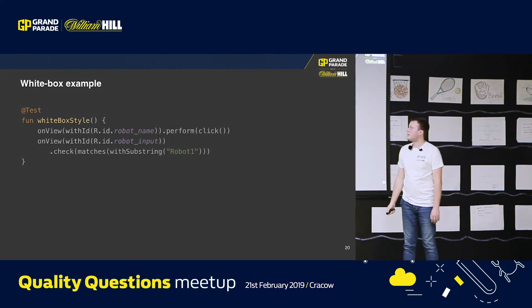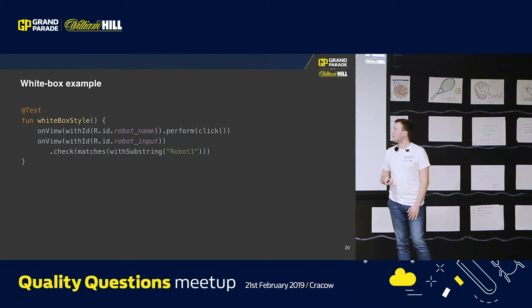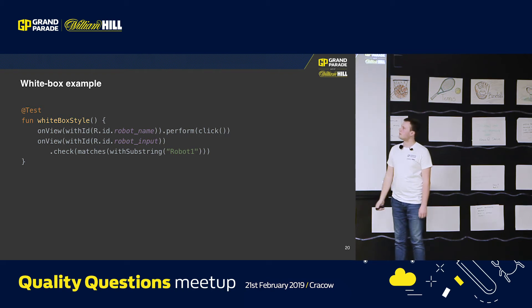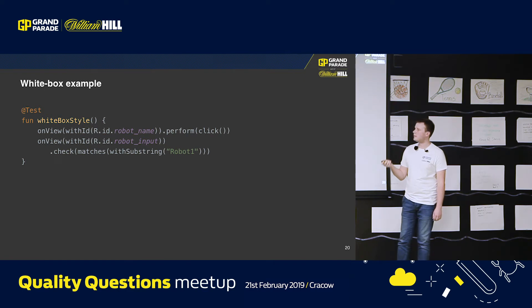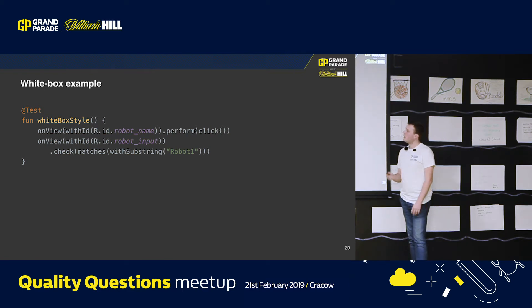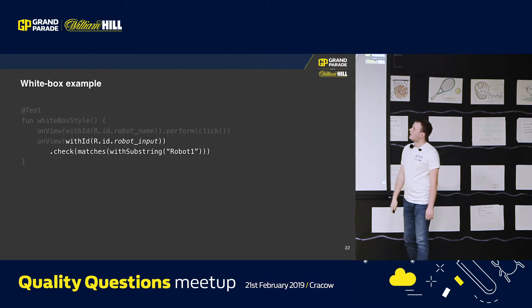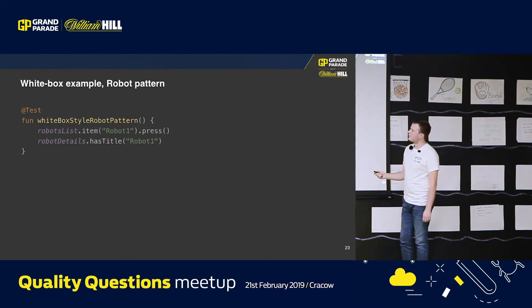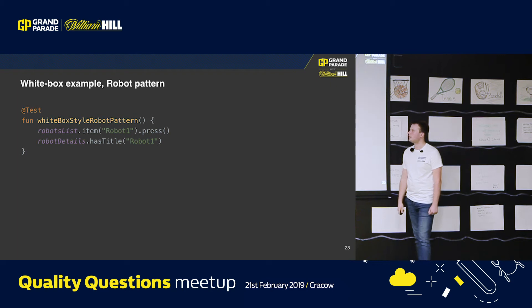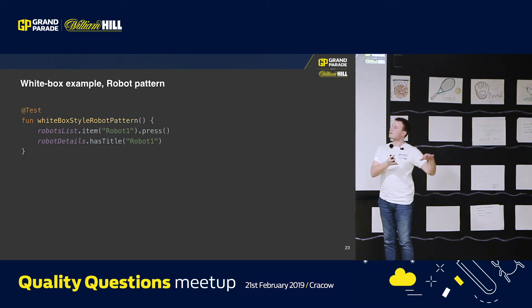When we write the same tests in a white box style, you may use IDs — exactly the IDs you need to use. Those IDs are different, it's much more readable, and your tests won't be flaky — you will point to the exact element on the screen you need. So this will be robot name and this will be some robot input field. You may even rewrite those tests using the Robot pattern, which was described in quality questions number one by my colleague. It's much more readable than using IDs inside the tests — this way you separate the ID of the screen from the test itself, and here you can see only actions, very explicitly written.